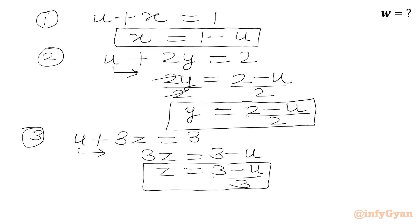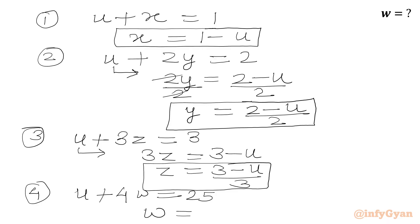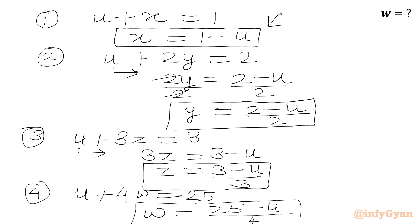From the fourth equation u plus 4w equal to 25, we take u to the RHS and get w equal to (25 minus u) over 4. So we now have x, y, z, and w all expressed in terms of u.